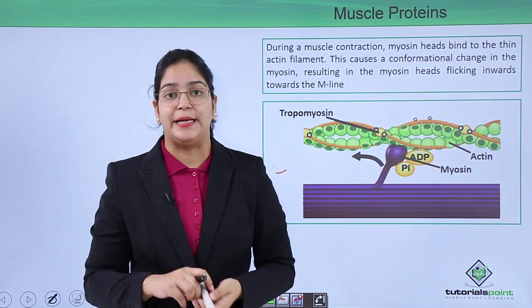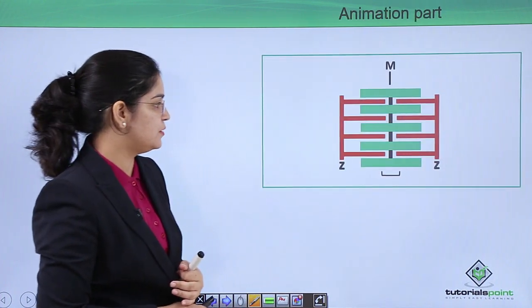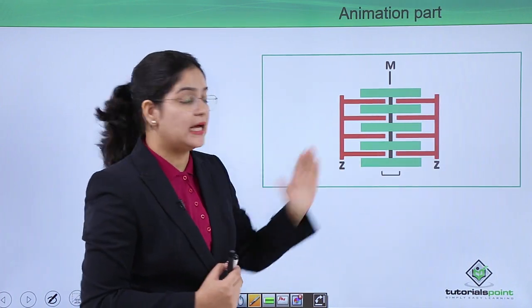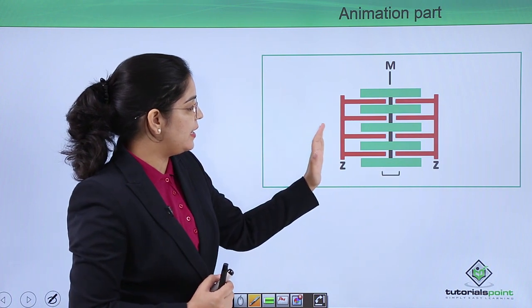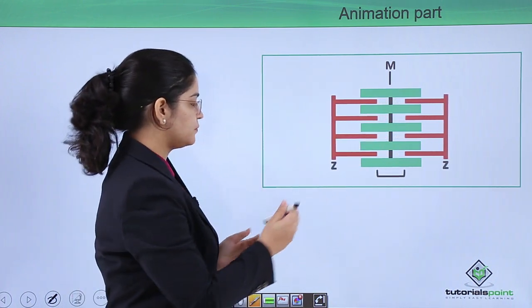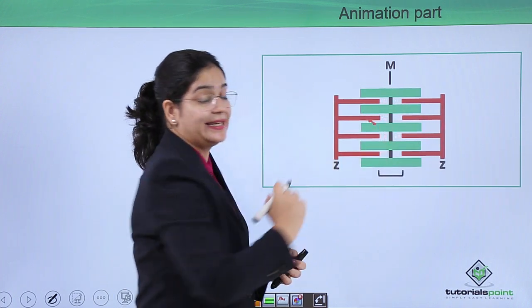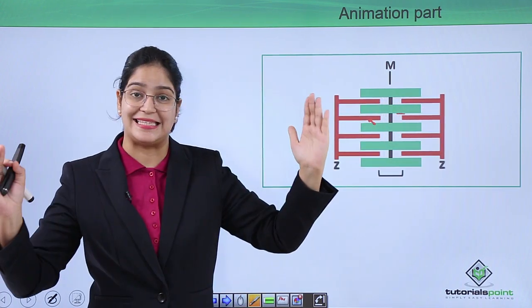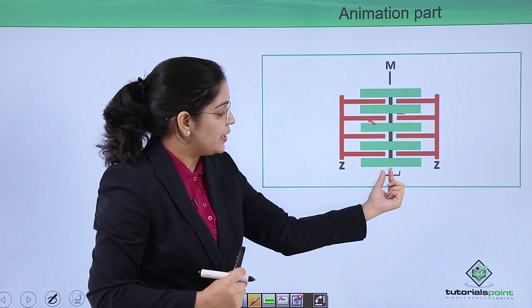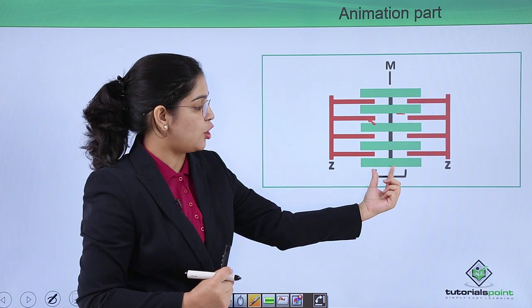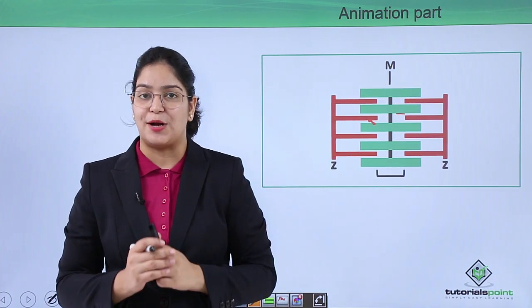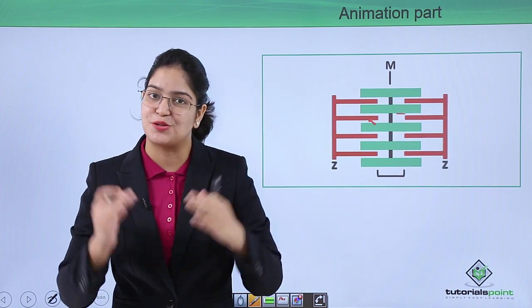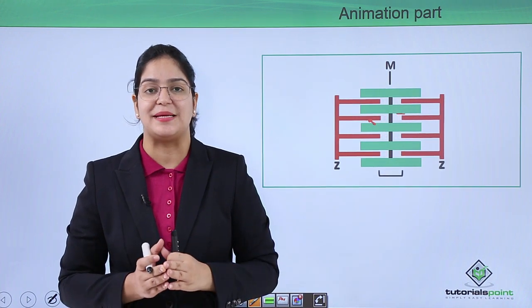This animation shows how sliding actually occurs. The red lines are the actin proteins and the green ones are the myosin proteins. The myosin heads are pulling the actin inward — from this side to this side — and the other actin moves inward from the opposite side. That is how contraction occurs. The H zone is shortening, as you can see, but there is no shortening of the thin and thick filaments themselves. In this video we have learned about the sliding filament theory and how muscle contraction occurs. In the next video we will learn about muscle contraction in detail. Thank you — Tutorials Point, simply easy learning.